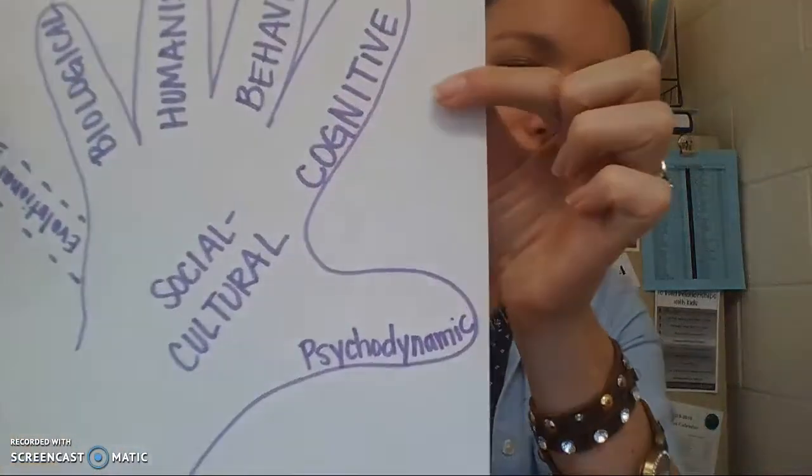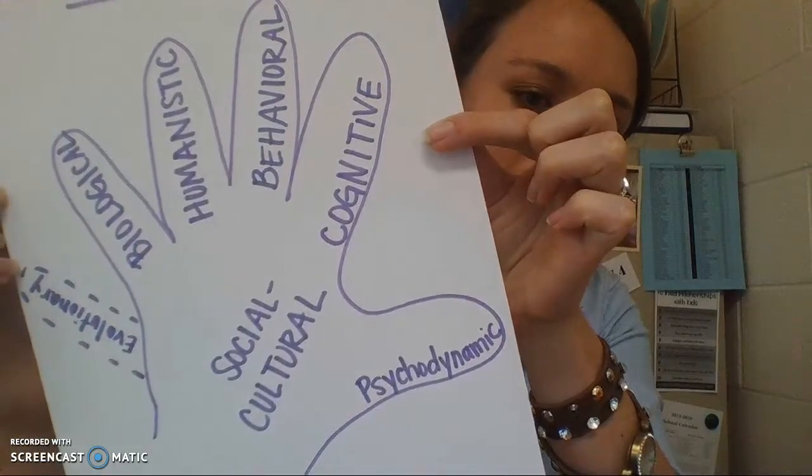We've done five fingers and the palm — that's six, and we have seven perspectives. On your drawn hand, draw a little extra finger off to the side — an invisible sixth finger — and write evolutionary there. The evolutionary perspective is where a psychologist explains your behavior through evolutionary ideas: that you have evolved to have those behaviors, through survival of the fittest, or through your parents passing on genes to you. So draw that sixth finger for the evolutionary perspective.